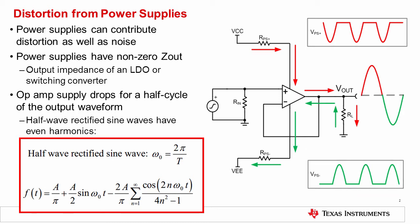The voltage on the op amp supply pins looks just like a half-wave rectified sine wave. If we perform a Fourier expansion on a half-wave rectified sine wave, the factor of 2 times n in the cosine function will generate only even harmonics. Note that the even harmonics are attenuated by the power supply rejection of the op amp, but this is finite, and so some of these harmonics will show up in the output signal.